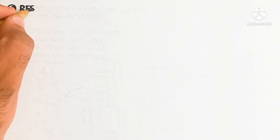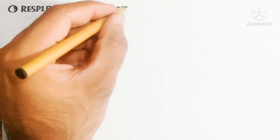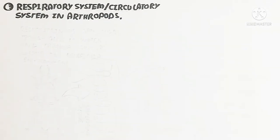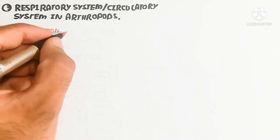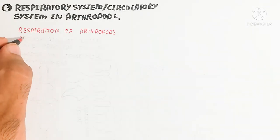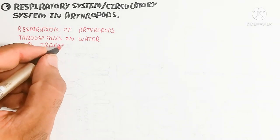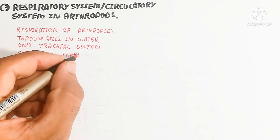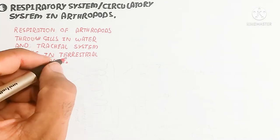In this video we will discuss the respiratory system and circulatory system in arthropods. Arthropoda is a phylum related to insect species with different classes such as Hexapoda. We will focus on the respiratory and circulatory systems. Arthropoda means jointed leg, and the exoskeleton is a key character, made up of chitin.